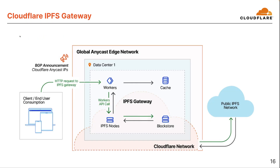Quick view of how the IPFS gateway works. Via Cloudflare's global Anycast network, an incoming HTTP request is sent to the closest data center to the user. An app on the Workers serverless platform receives the request and checks the local cache. If IPFS content is cached, it's returned; otherwise, Workers makes an HTTP request via the Workers API to IPFS nodes on the Cloudflare network to check if they have the content. If content is found, it's returned to Workers and, respectively, to the client. IPFS nodes on the Cloudflare network are also peering with the public IPFS network and can access it as needed.